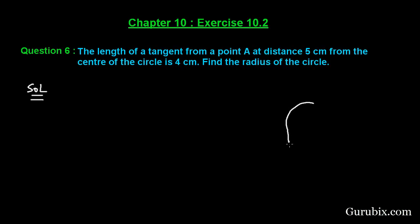Here we have a circle. This is the circle and suppose this is the center O. The tangent is from a point A at distance 5 cm from the center. We are given that the distance of A from the center is 5 cm. This is the tangent of the circle which touches the circle at point B.